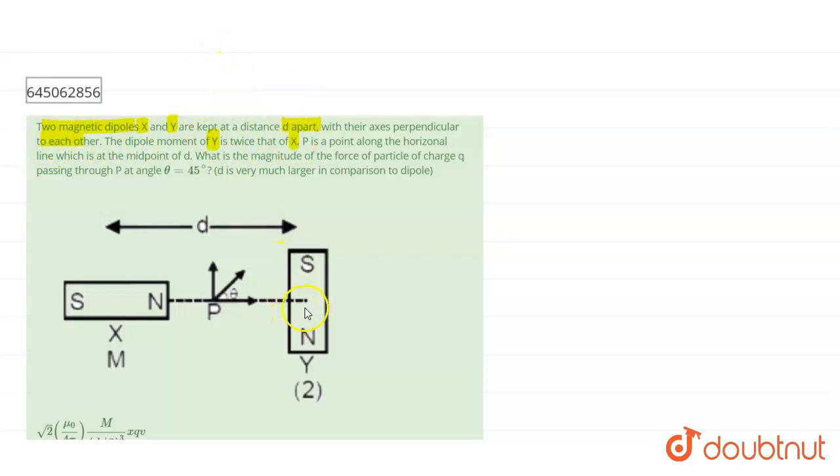So the dipole moment, this is Y. Let the dipole moment of Y is 2M and dipole moment of X is M. P is a point along the horizontal line which is the midpoint of D.